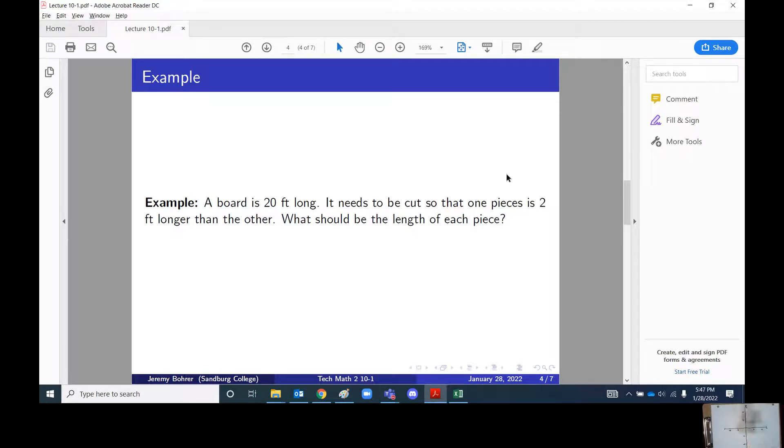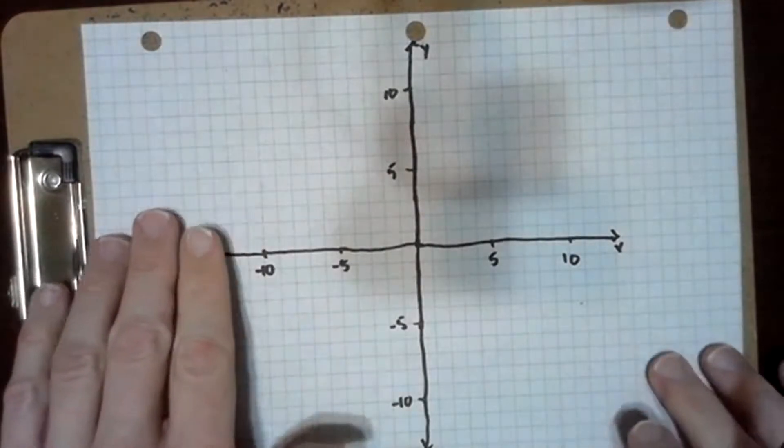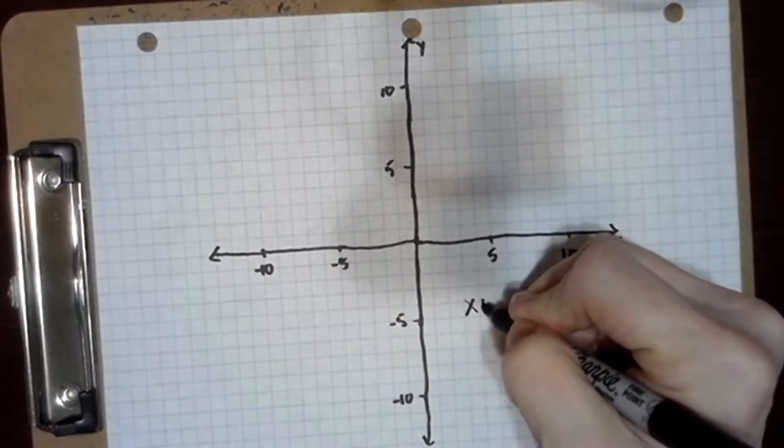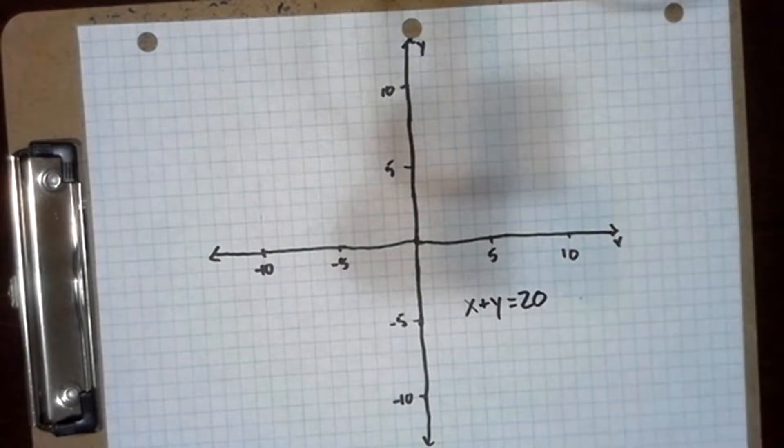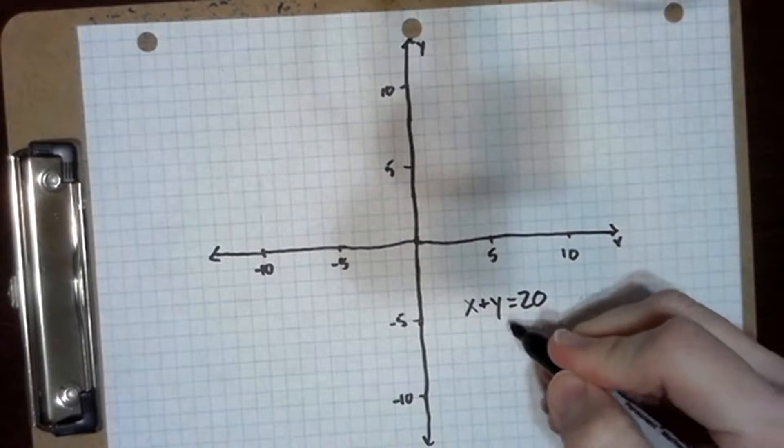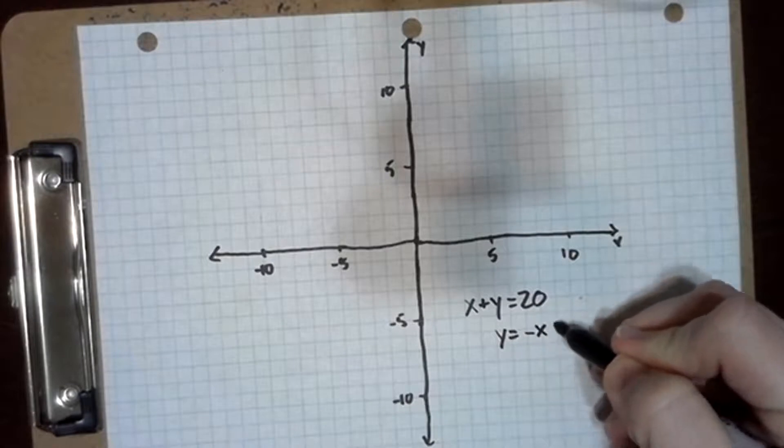And based on this we can set up a couple of different equations. The first equation is pretty simple. If the board is 20 feet long and we're dividing it into two pieces, that means that x plus y equals 20. The lengths of board x and board y will be a total of 20 feet, and we want to write this as a function of y in terms of x, so that's y is equal to negative x plus 20.